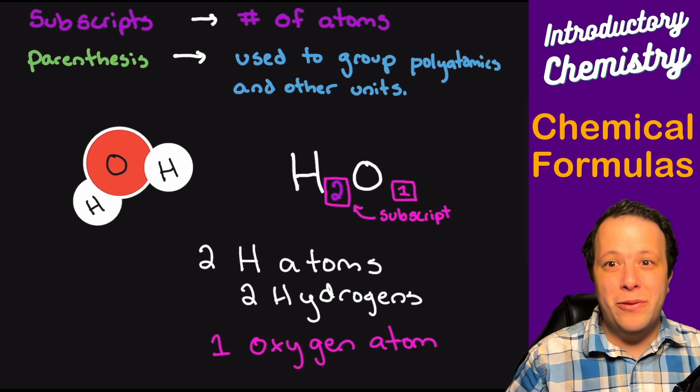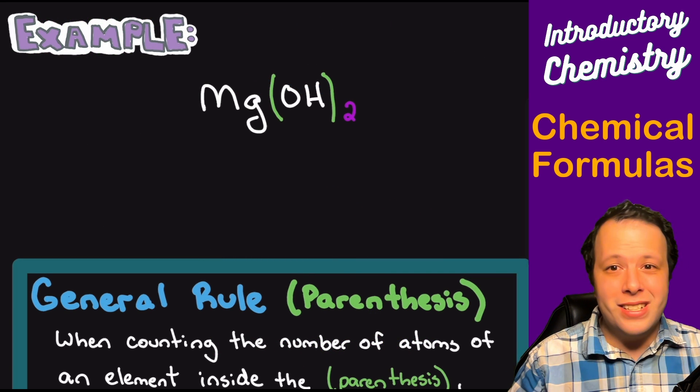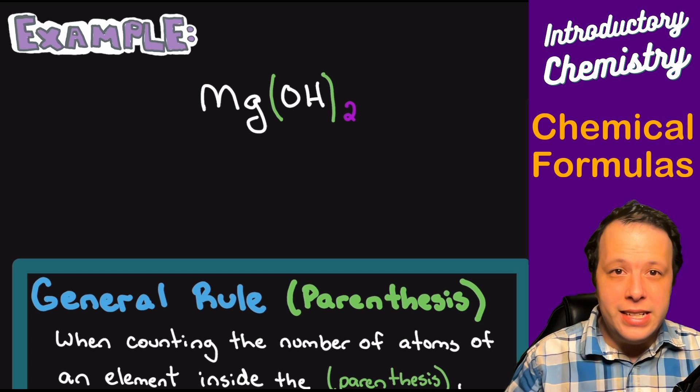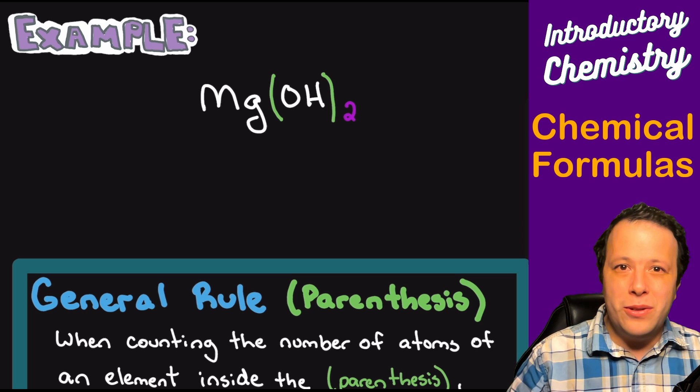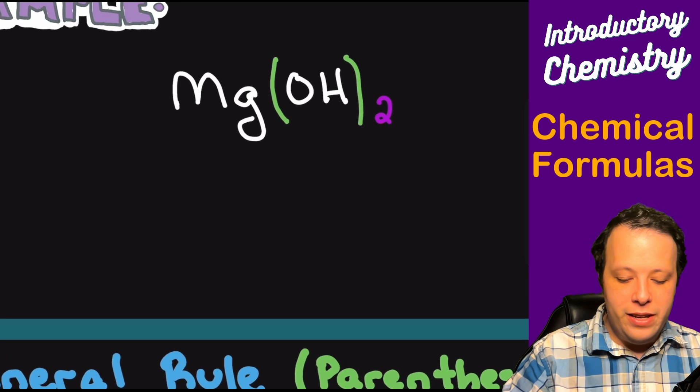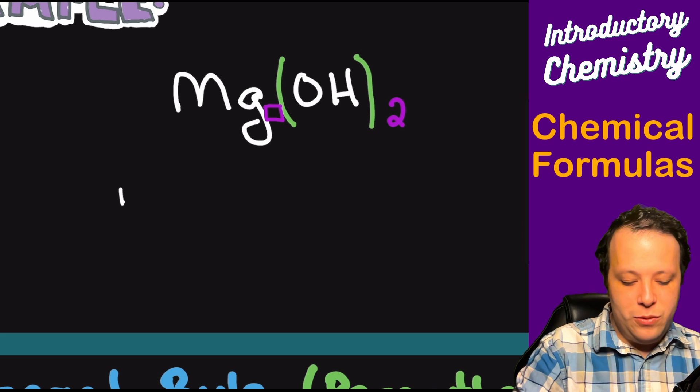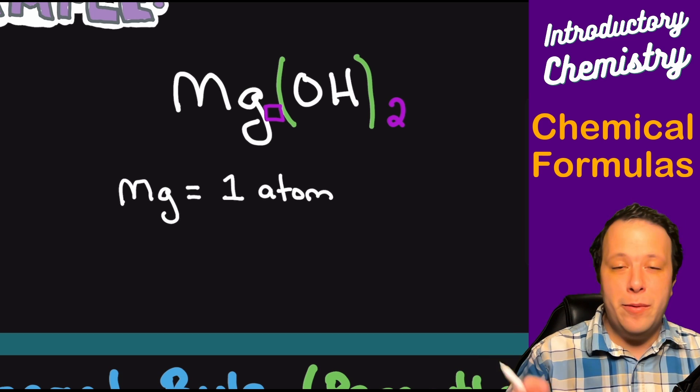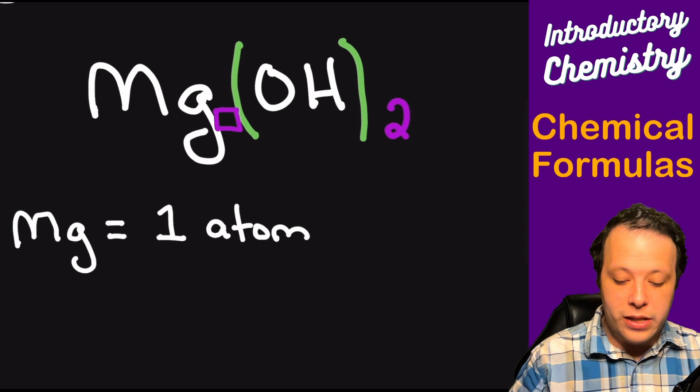Alright, let's go on to our next part so that way we can learn a little bit more of these different chemical formulas. So I have magnesium hydroxide here written for us, and we are going to go through what the general rule is for parentheses. So how exactly do they work? The first thing we are looking for is our subscripts. One thing you can notice right away: there is no subscript written next to magnesium, so mg, there is one atom of mg here.